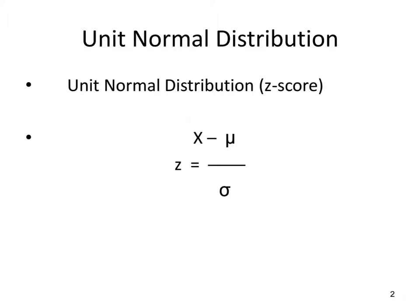Hello, this is Ruby and today we're going to be talking about z-scores. We're going to be talking about the tail, the body, and between mean and z. The first thing we're going to look at is our unit normal distribution and how to use that unit normal distribution, which is a z-score table.